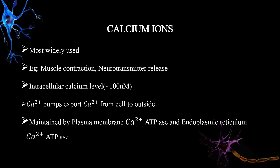The third category of secondary messengers are ions — for example, calcium and magnesium ions. The most widely used ion is calcium, which is important in muscle contraction, neurotransmitter release, and more. Intracellular calcium levels are maintained at a very low level compared to the extracellular compartment, regulated by plasma membrane calcium ATPase and endoplasmic reticulum calcium ATPase. Calcium is excluded from the cytosol because it can bind water and precipitate phosphate, and unlike other molecules, calcium ions cannot be chemically altered — so cells must compartmentalize them.